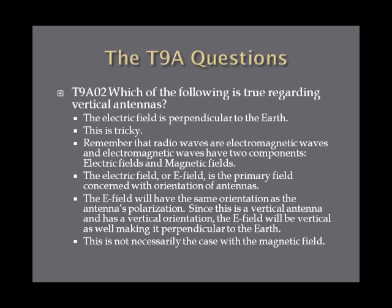Which of the following is true regarding vertical antennas? The answer is the electric field is perpendicular to the earth, meaning it is at a 90-degree angle to the earth. This is sort of tricky, so here's some background to help you remember.